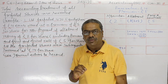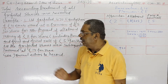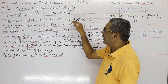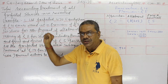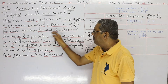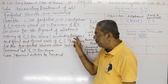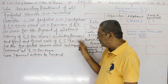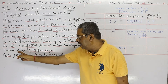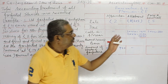Here is an example: A Limited forfeited 470 equity shares of rupees 10 each, issued at a premium of rupees 5 per share, for non-payment of allotment money of rupees 8 per share including premium, and first and final call of rupees 5 per share. All the forfeited shares were subsequently re-issued at rupees 14 per share. Give journal entries to record. Here is the working note.